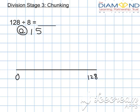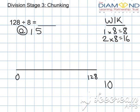What the children do is they put a 'what I know' box down the side, which is known facts in the eight times table that will help them. So I'm gonna put 1 times 8 is 8, 2 times 8 is double that which is 16, 10 times 8 is 80.